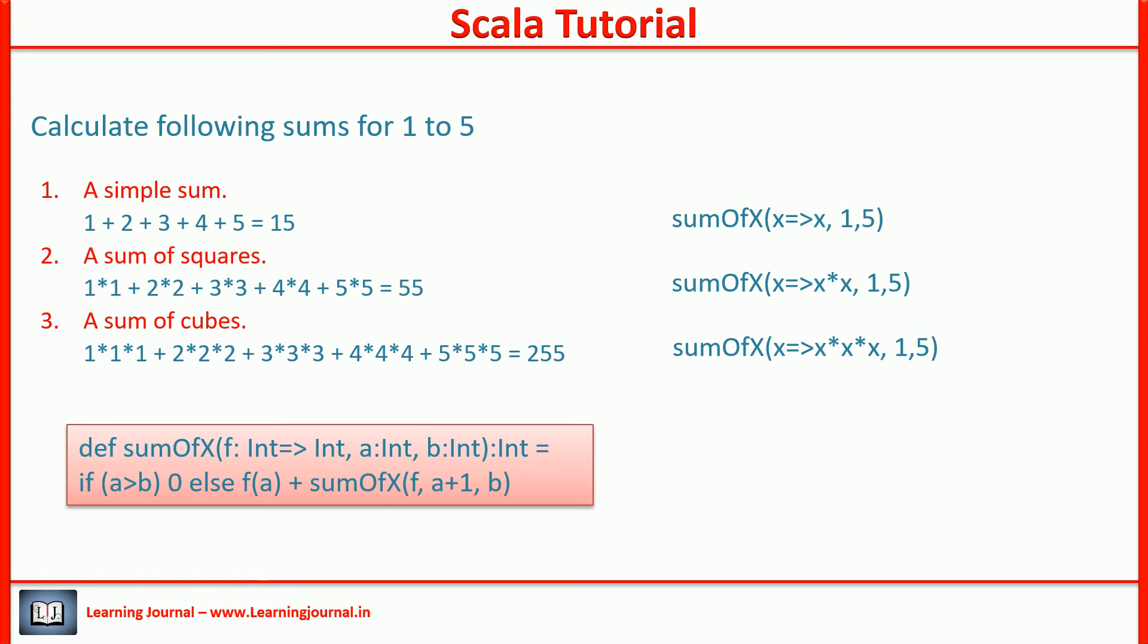Now, you might be wondering, why do we need a partially applied function? I mean, it's a nice idea. Take a generic function, fix some of the parameters and create a brand new function. But why the hell I need to do that? If at all, I need to calculate a sum of cubes, I will simply use the sum of x like this. Why do I take the pane to create a partially applied function and then use it to calculate the sum of cubes? Pause the video and think about it. There is a difference in type.